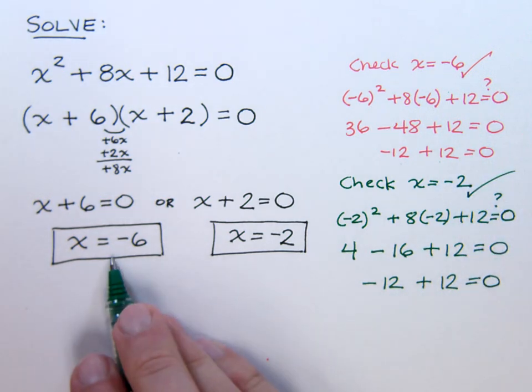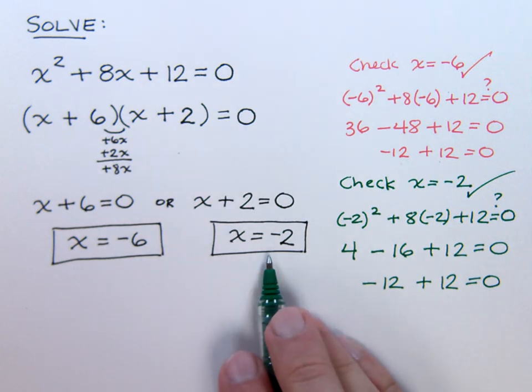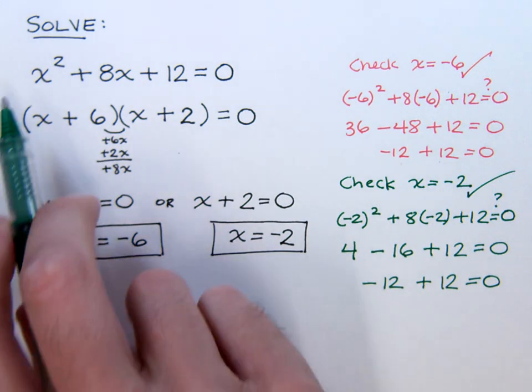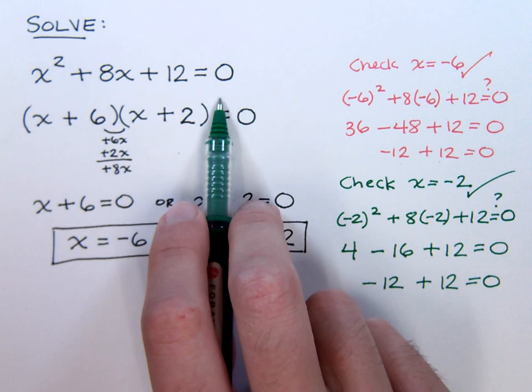So we know that both x equals negative 6 and x equals negative 2 are suitable replacements for x in this equation to give me a true statement.